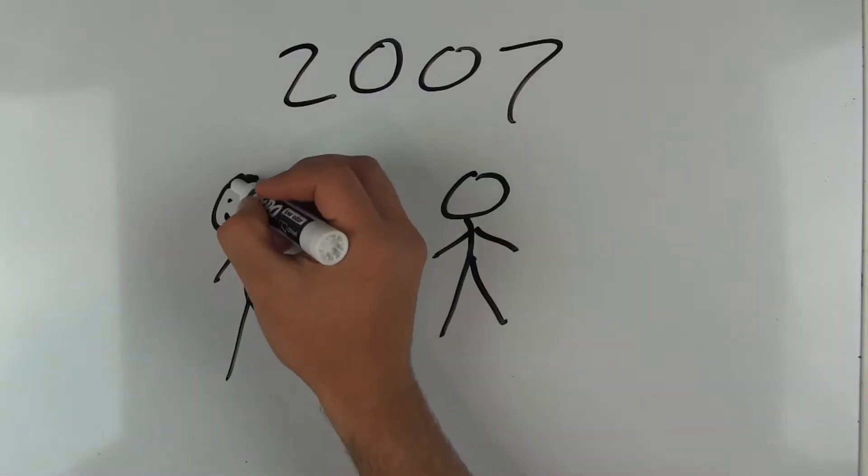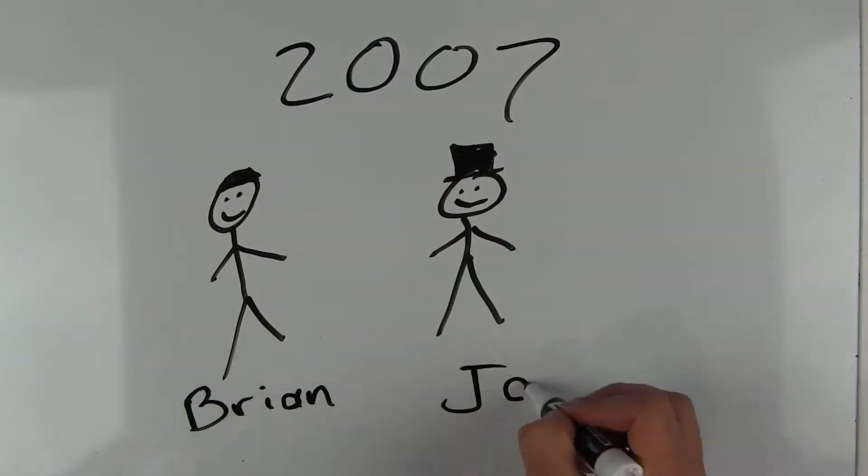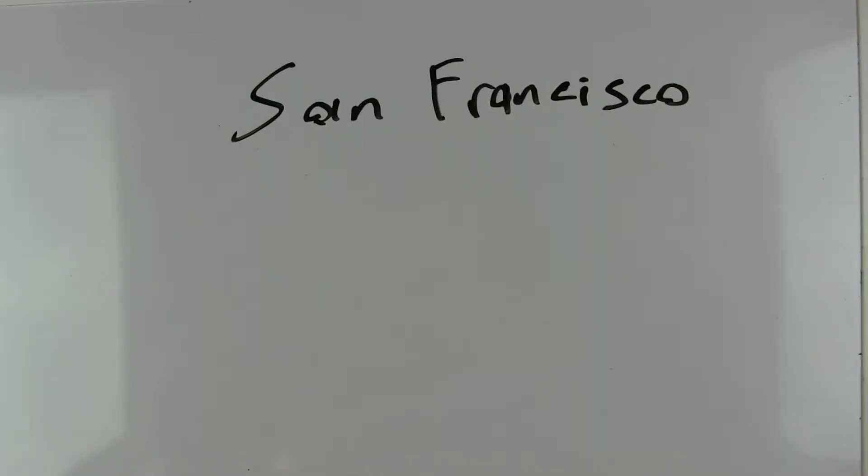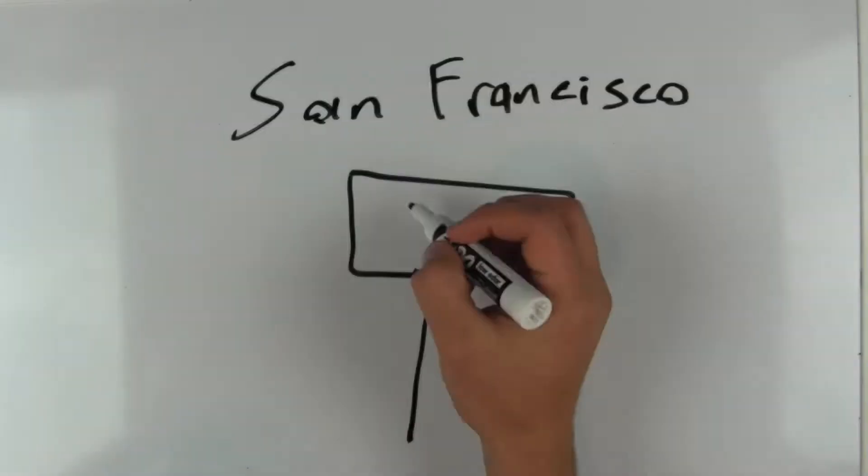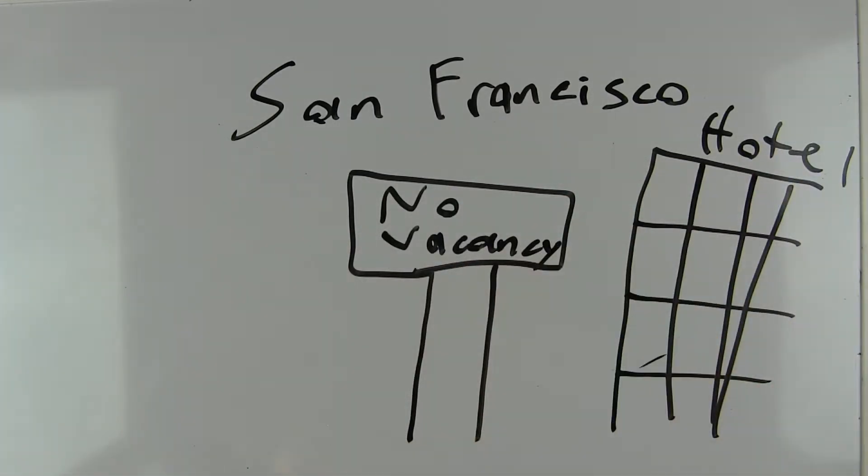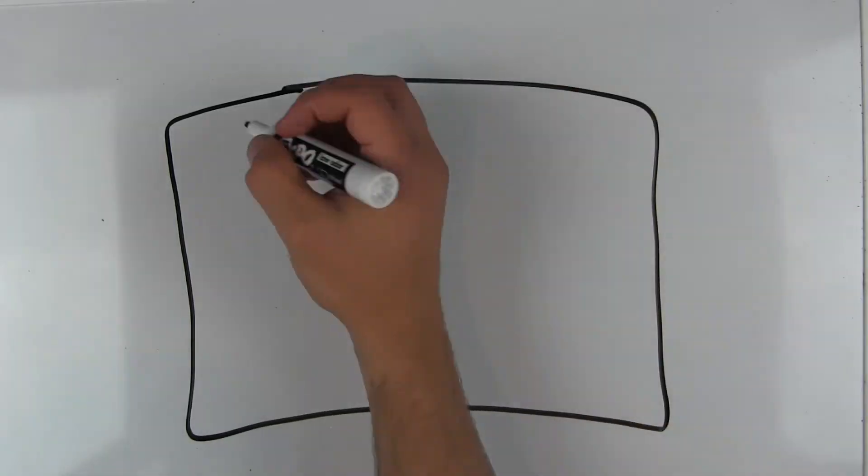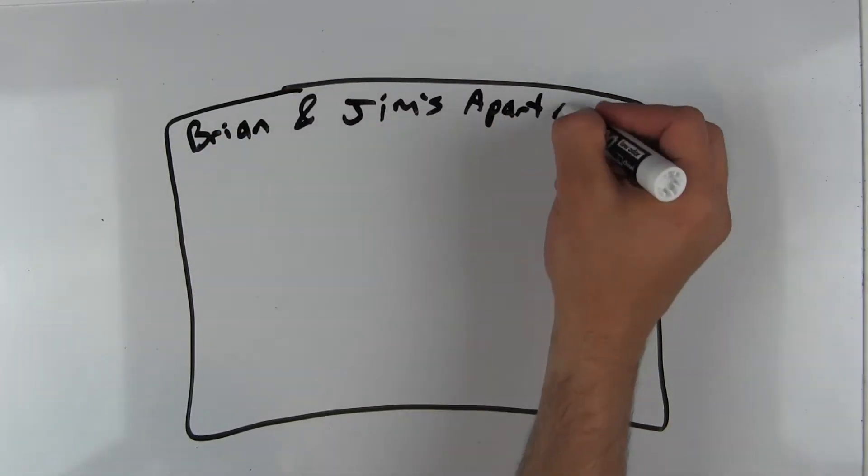Airbnb was founded in 2007 by Brian Chesky and Joe Gebbia. The two had just moved to San Francisco and were having trouble paying rent. The local industrial design conference was coming through town and all hotel rooms were booked in the area. So the two thought it would be a good idea to buy some air mattresses and rent them out to people as a room.